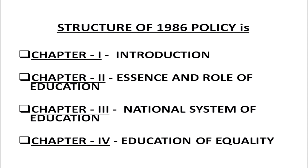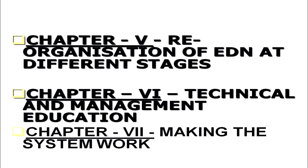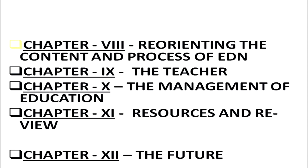This policy covers 12 chapters and has nearly 52 pages. The first chapter is introduction; second chapter is essence and role of education; third chapter is national system of education; and fourth chapter is education for equality. Fifth chapter is reorganization of education at different stages. Chapter 6 states technical and management education. Chapter 7 says making the system work. Chapter 8 says reorienting the content and process of education. Chapter 9 is the teacher, Chapter 10 is the management of education, Chapter 11 is resources and review, and Chapter 12 is the future.